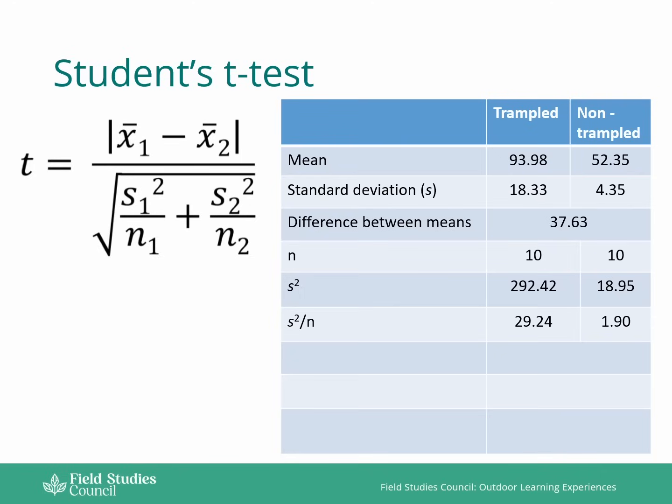The next step then is to add those two values together. So as you can see in the center of our equation, we're just adding those two values together and that will give you a total for the bottom half of the equation.